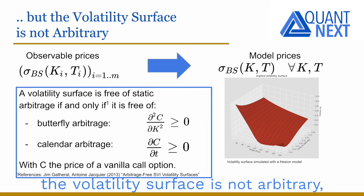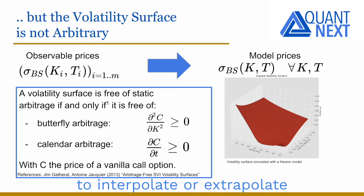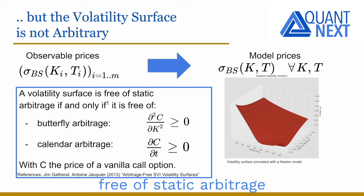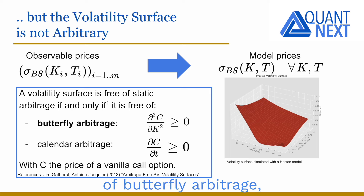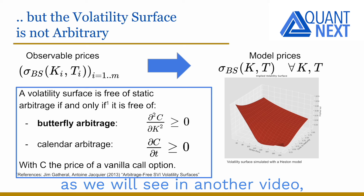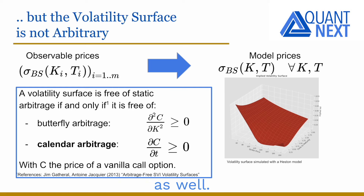However, the volatility surface is not arbitrary and we have to be careful with the model used to interpolate or extrapolate the volatility curves. Indeed, there are arbitrage constraints and the volatility surface is free of static arbitrage if and only if it is free of butterfly arbitrage — which guarantees that the risk-neutral density is positive, as we will see in another video — and it is free of calendar arbitrage as well.